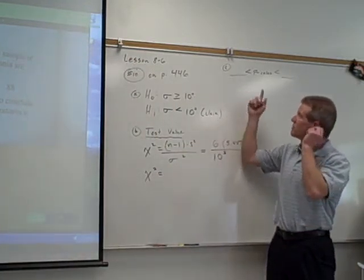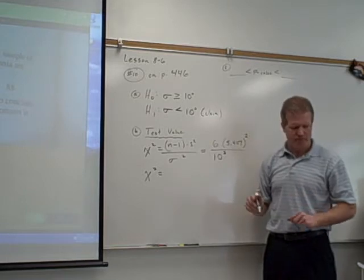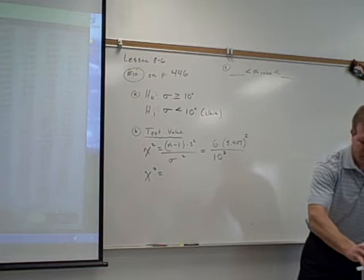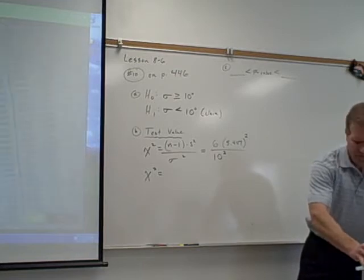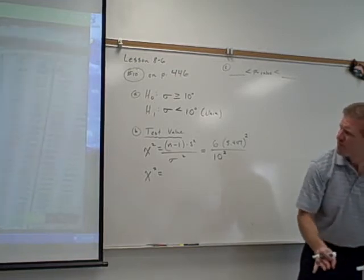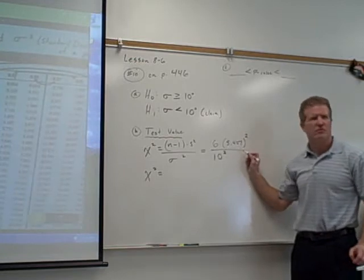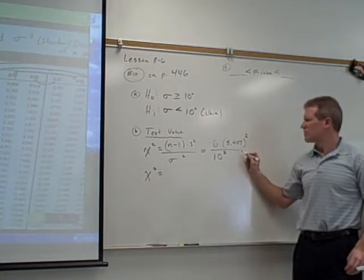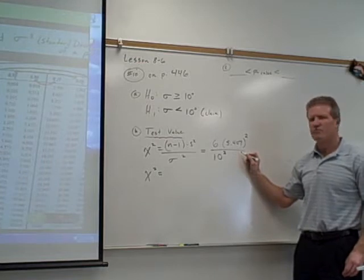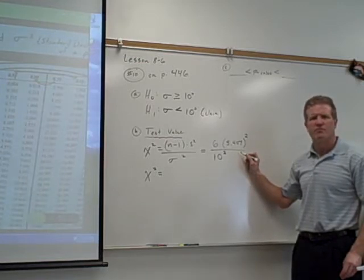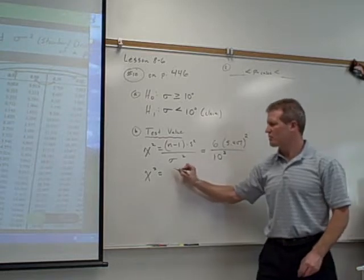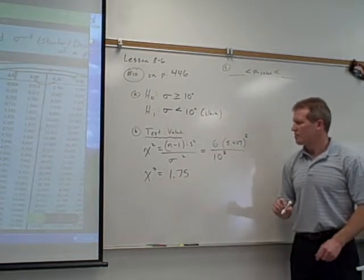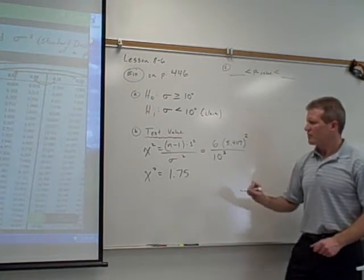Once you find that value, then you're going to find your p-value with step C. Do you want me to figure out what this comes out to? I got 1.75. All right, I'm going to go with 1.75, and we can check it later, but that's more reasonable. So that's your test value.